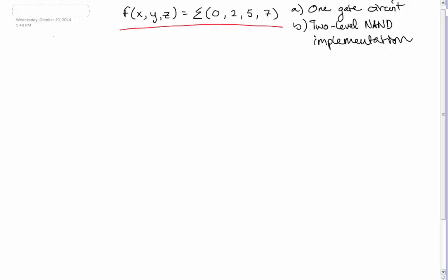So let's get started. First we're going to do our K-map, so we have three variables. Three variables, 2 to the power of 3 is 8, so we have 8 squares.